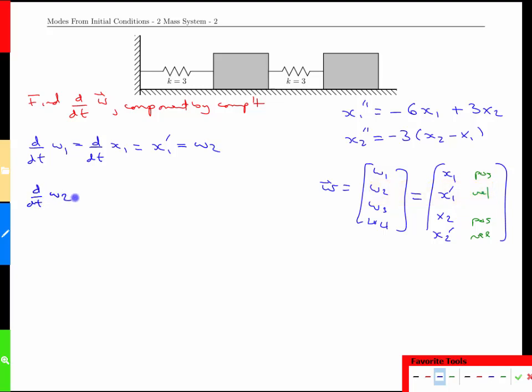The derivative of w2 is the derivative of x1 prime, so one more derivative running around. That's x1 double prime, and this we have an equation for. We're going to get negative 6x1 plus 3x2, but x1 is w1, and x2 is not w2. You've got to be careful, it's w3. But that's it.